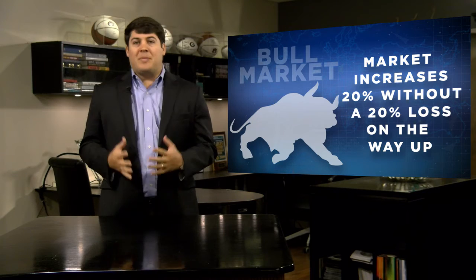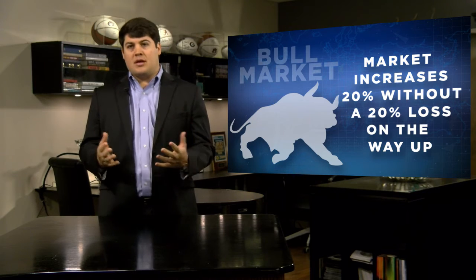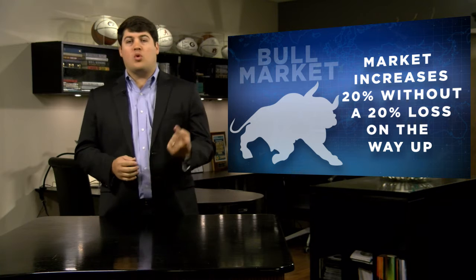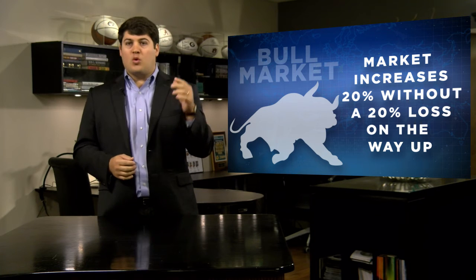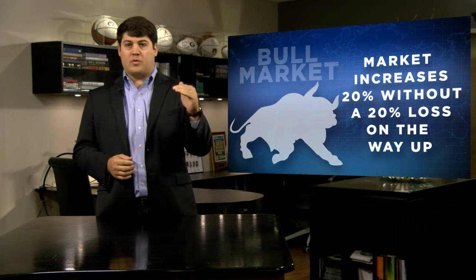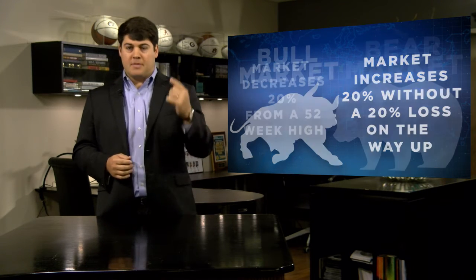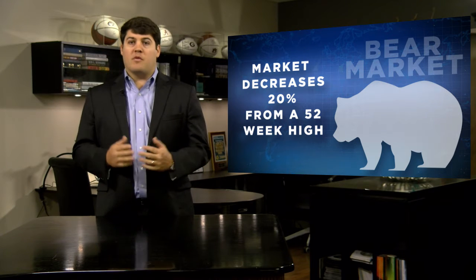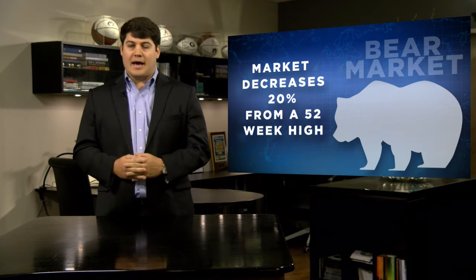Another way to think about it is in a bear market, a bear claws its way down — it claws its opponents down. By definition, a bull market is when the market is up 20% without falling 20% on its way up. A bear market is when the market is down 20% from a 52-week high.